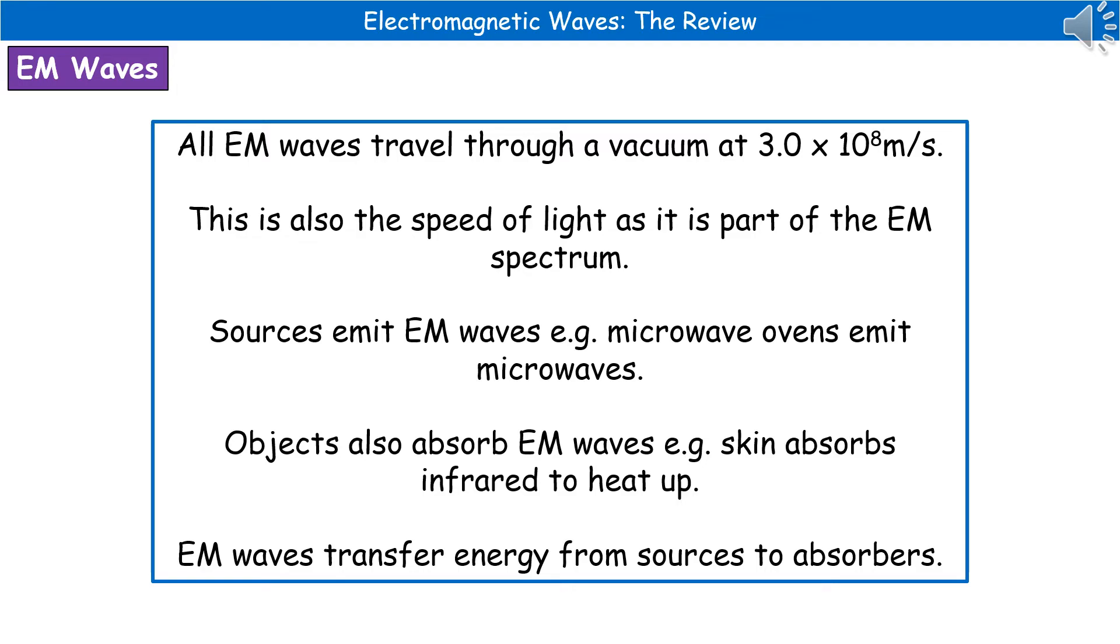There are also some other words we should be aware of here. So the first one is when we're talking about a source, that is something that emits electromagnetic waves. So, for example, we might have a microwave oven emitting a microwave, therefore it's a source. We've also got other objects that are capable of absorbing electromagnetic waves. And a good example here is the skin, which is able to absorb infrared to heat up. But we also find that electromagnetic waves transfer energy from those sources to the absorbers. So just make sure you're aware of those different terms and how they can be used.